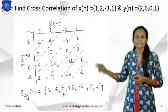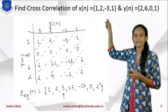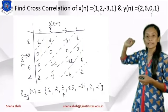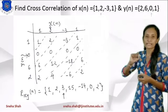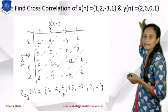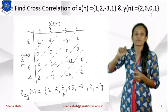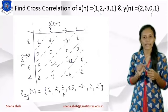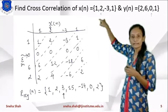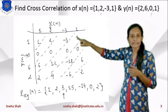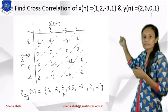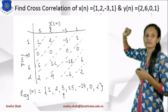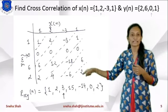The next example is: find cross-correlation where x(n) = {1, 2, -3, 1} with arrow below the 2, and y(n) = {2, 0, -1} with arrow below the 0. According to that, the position of the arrow in the answer will be changed. We write x(n) as-is: {1, 2, -3, 1}, and y(n) will be written in folded form as {1, 0, 6, 2}.